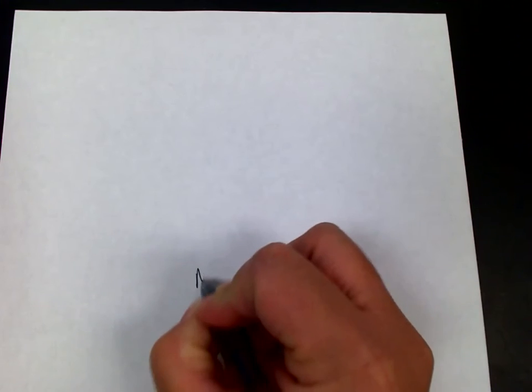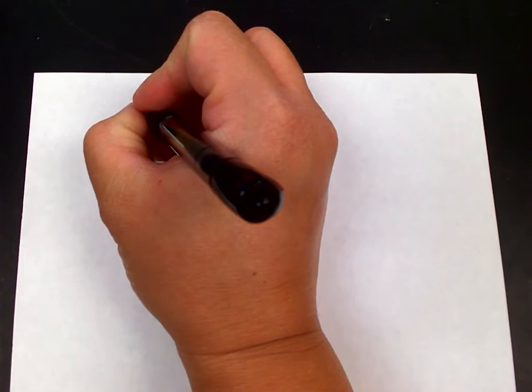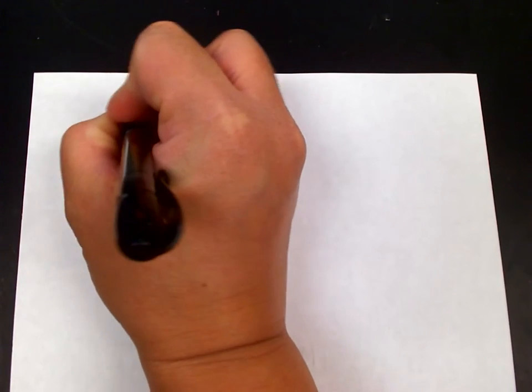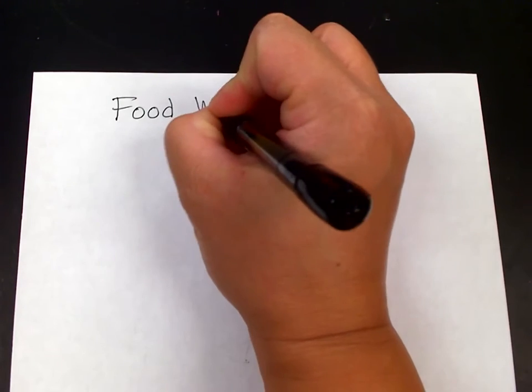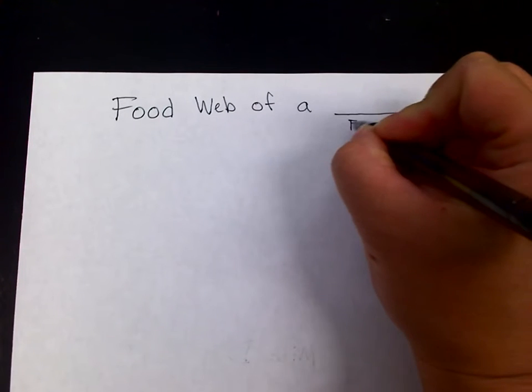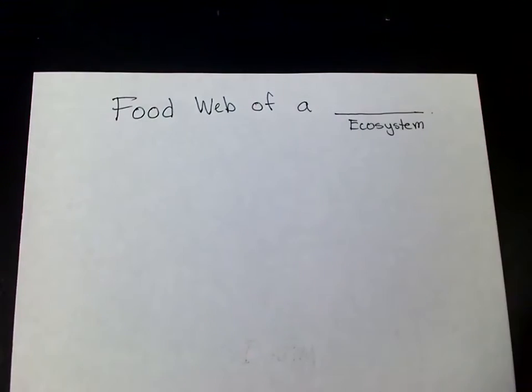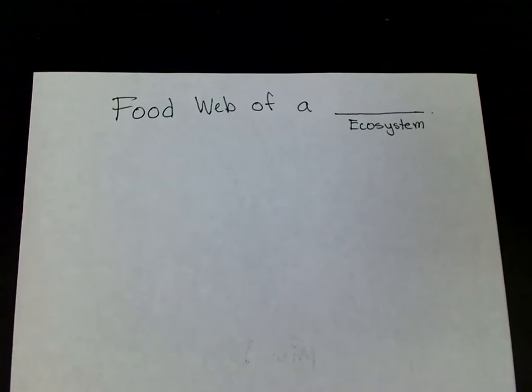I'm going to explain how to do the food webs activity. First, on one side of the paper you're going to put your name, then flip the paper over. At the top of the paper you're going to write down the following title: 'Food Web of a...' and then here you're going to put down which ecosystem you are working on.